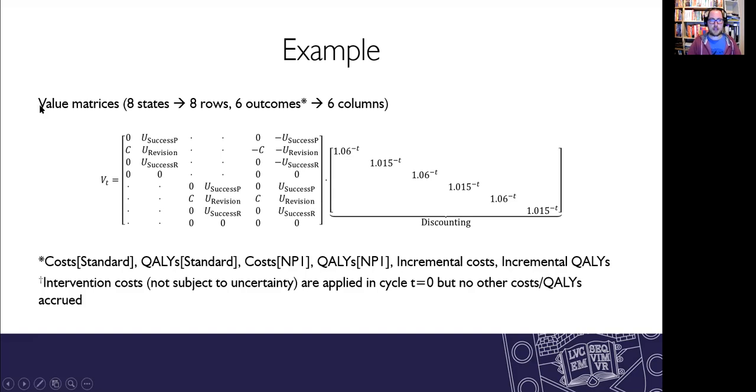We've gone from having a value vector which I talked about previously to now having value matrices. So that's because we've got six outcomes now instead of one. So those six outcomes are the costs and qualities in the standard prosthesis, costs and qualities in the new prosthesis, and then incremental costs and incremental qualities. And then we have eight states in the model so our value matrix at each time point is an eight by six matrix. And the only thing that varies over time is actually this discounting that's factored in to these value matrices.